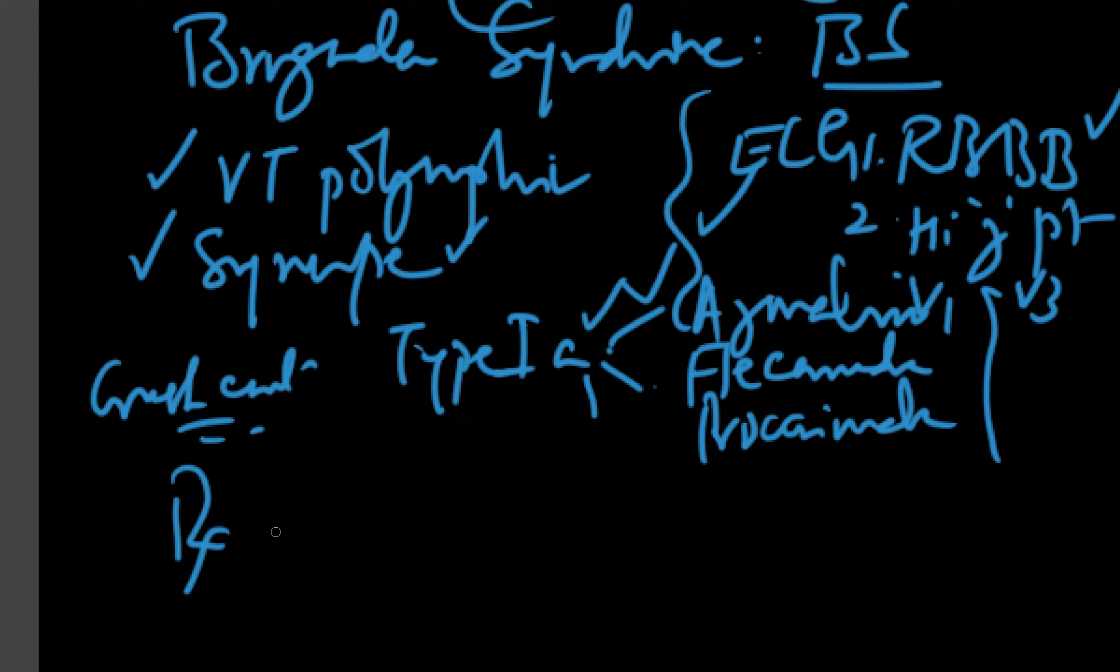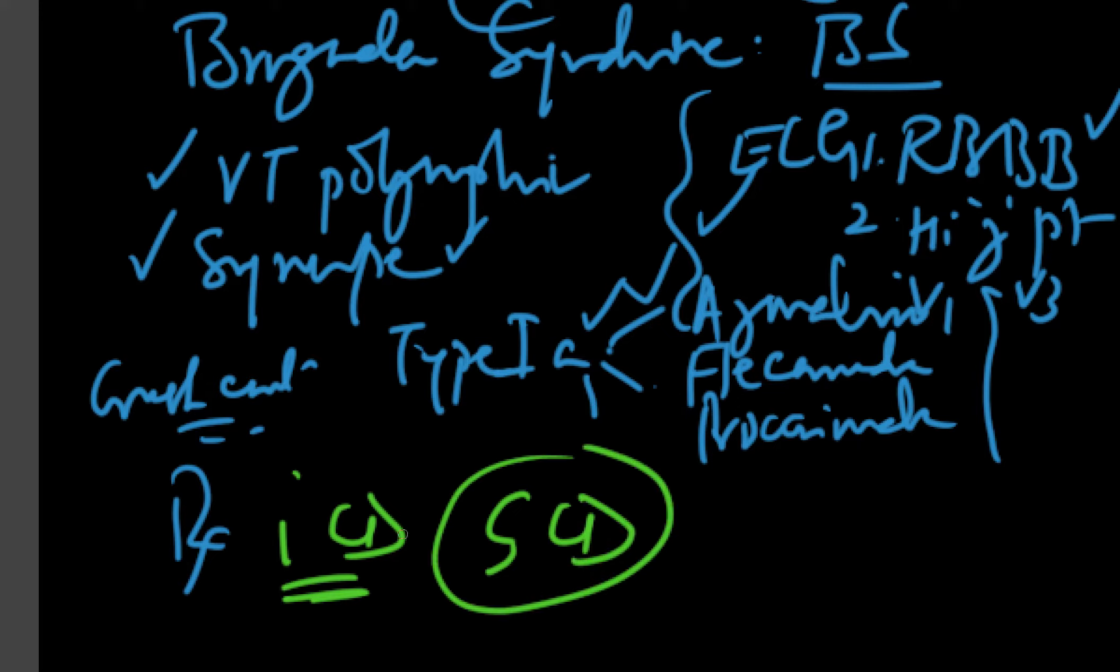Why do we give an ICD? ICD placement is the procedure of choice. People have tried drugs, medications, but none of them are sufficiently preventing the sudden cardiac death. Remember, you're talking about sudden cardiac death. A lot of people have decided to even do EP studies, but that is still controversial and it has a failing role. At this point, if somebody is presenting with syncope and ECG with these abnormalities, I think an ICD is warranted right away.